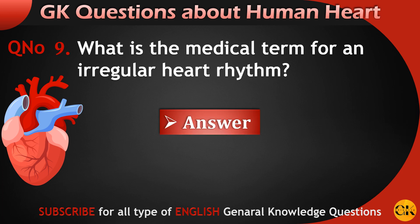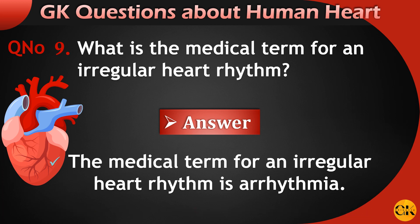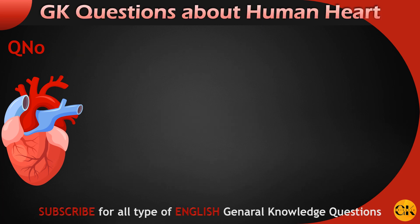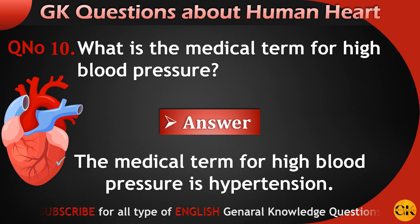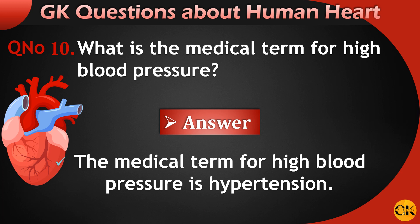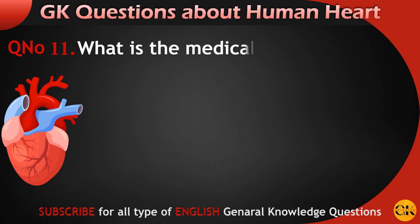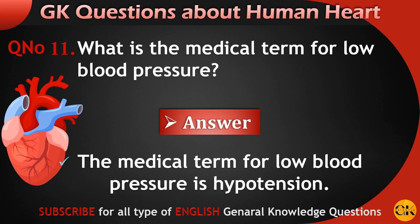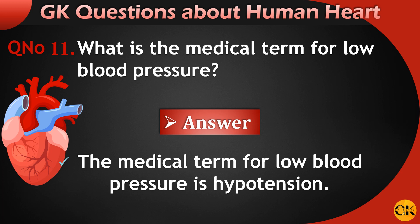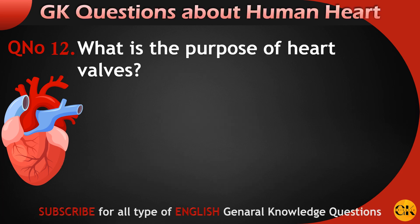What is the medical term for a heart attack? The medical term for a heart attack is myocardial infarction. What is the medical term for an irregular heart rhythm? The medical term for an irregular heart rhythm is arrhythmia. What is the medical term for high blood pressure? The medical term for high blood pressure is hypertension. What is the medical term for low blood pressure? The medical term for low blood pressure is hypotension.